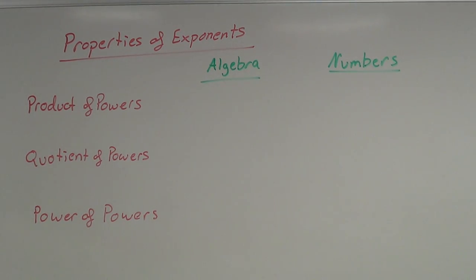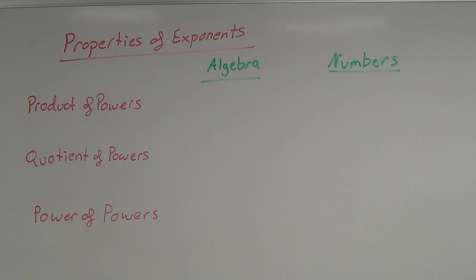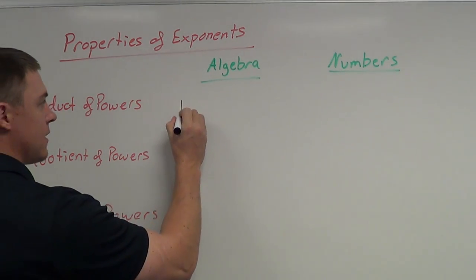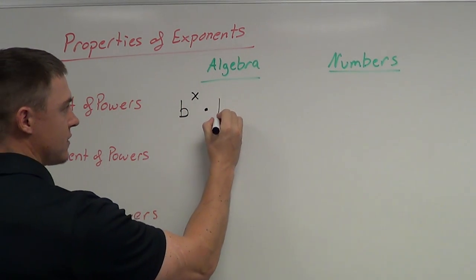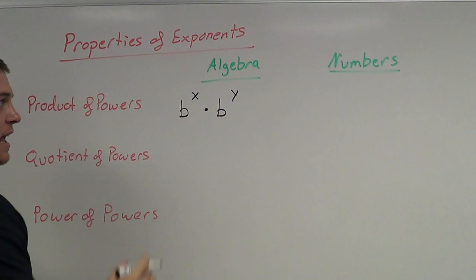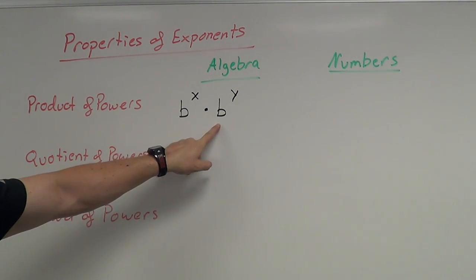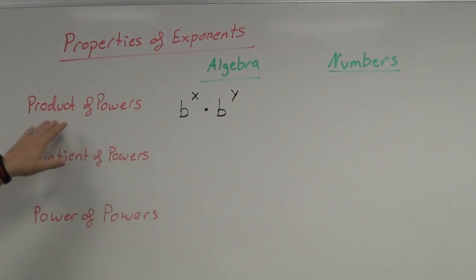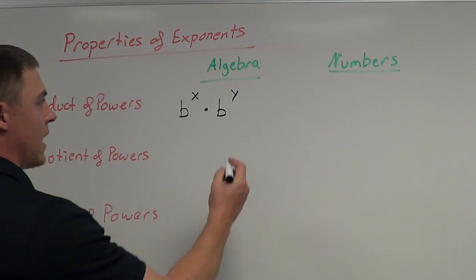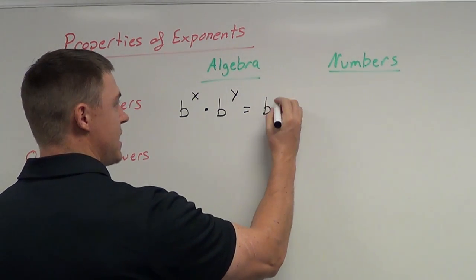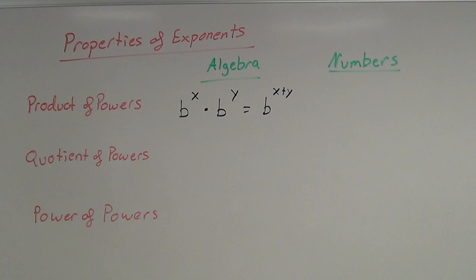Now for the product of powers rule. Basically what the product rule says is that if you're multiplying variables or numbers with like bases, you need to add the exponents. So if I have some base b to the x power times that same base b to the y power, the result is b to the x plus y — where x plus y is in the exponent position.